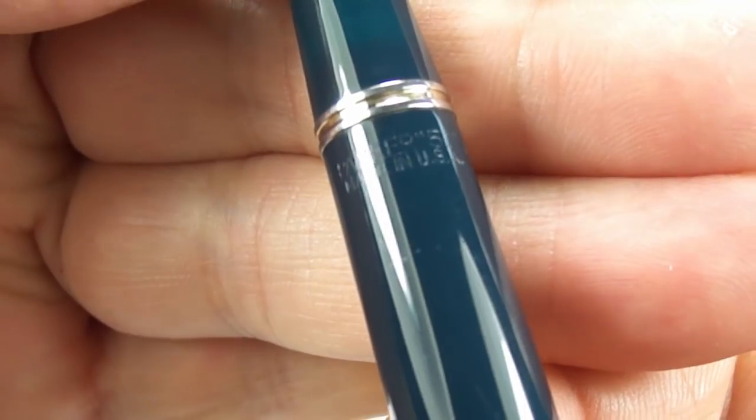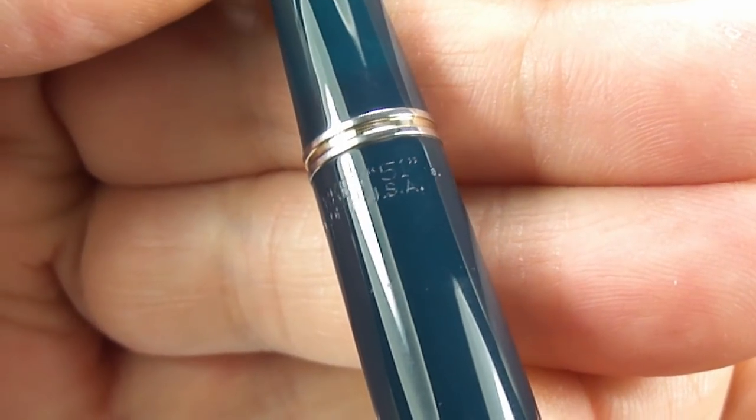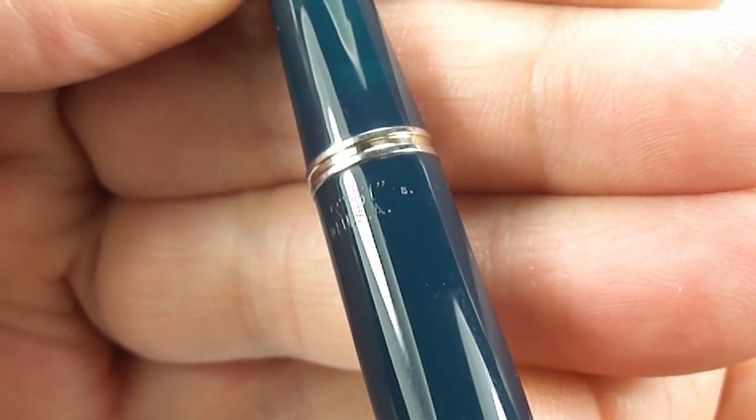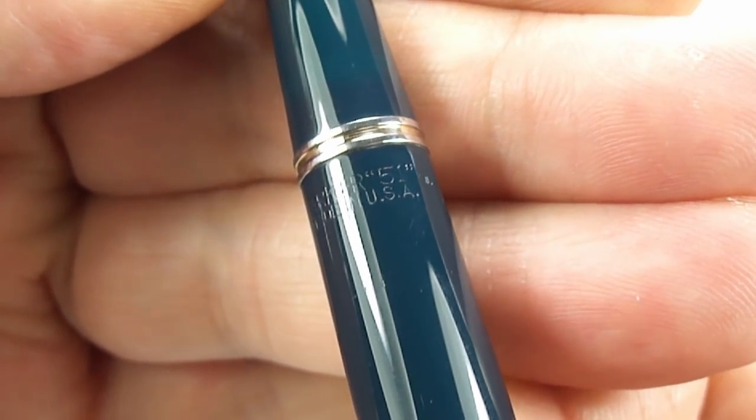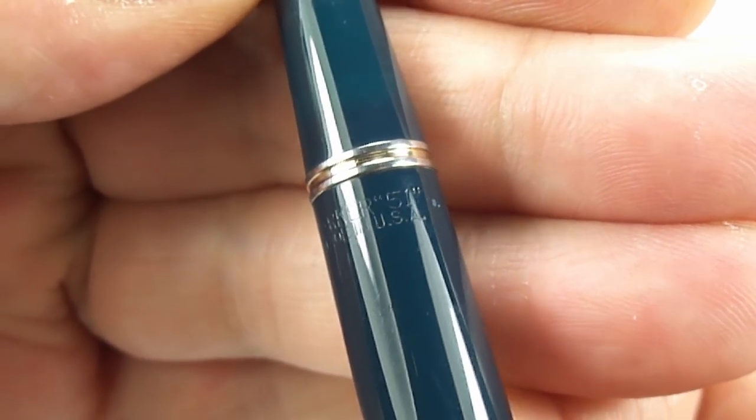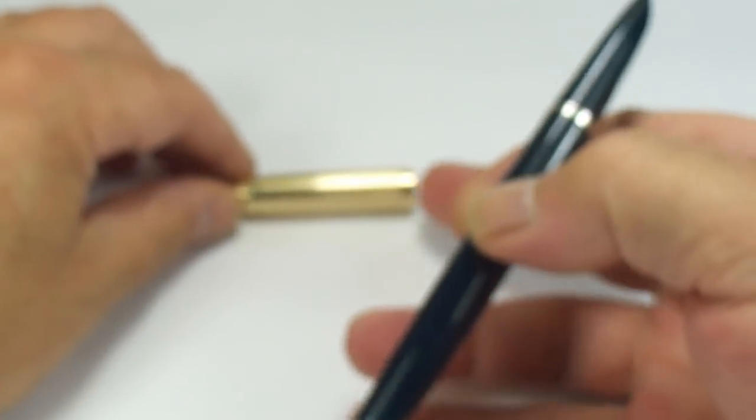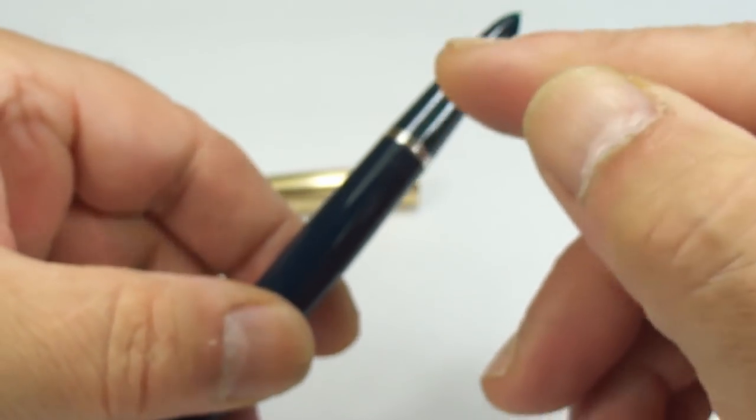The nice thing about this pen, it also has a nice clear imprint. Let's bring it nice and close. Keep it nice and still. And it reads Parker 51, to the right of the 51, it has the number 8, which is dating this pen to 1948. And just below there, you can see it also says Made in USA. So the barrel imprint is correct with the imprint of the cap as well. So it's a Made in USA, 1948.